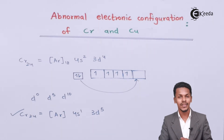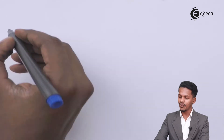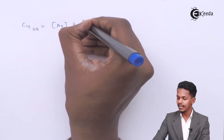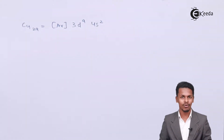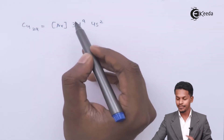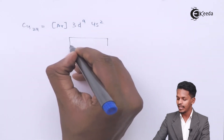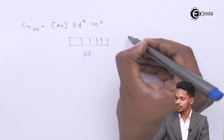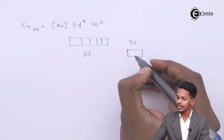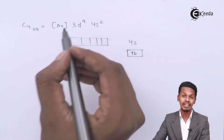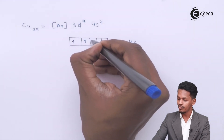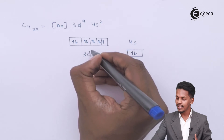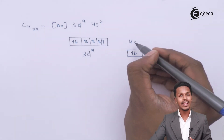Now let me talk about copper. If we write the electronic configuration of copper, its atomic number is 29, so we write it as [Ar] 3d⁹ 4s². This is the expected electronic configuration. The D subshell consists of 9 electrons — 1, 2, 3, 4, 5, 6, 7, 8, and 9 — and the 4s has 2 electrons. So this D orbital is not completely filled.